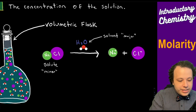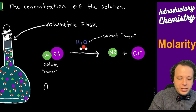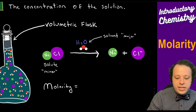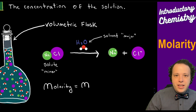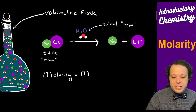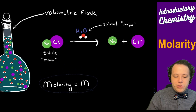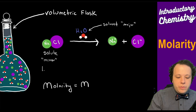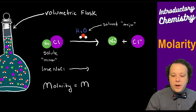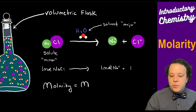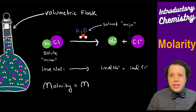Molarity is always written as big M. The units for molarity: if we read the dissociation like a chemical formula, one mole of NaCl is dissociating to one mole of sodium⁺ and one mole of chloride. So what better way to represent a concentration than by moles?